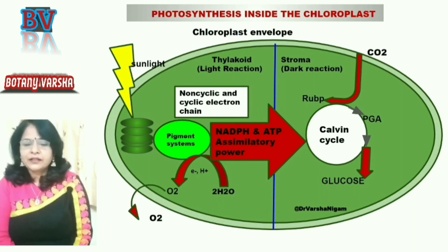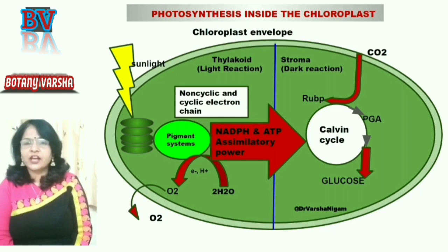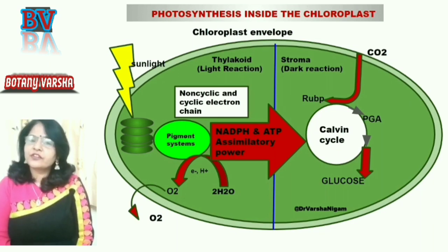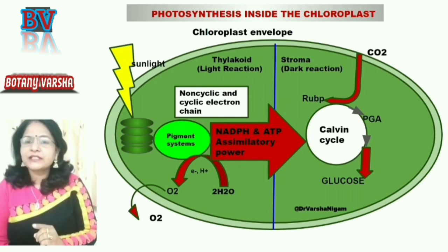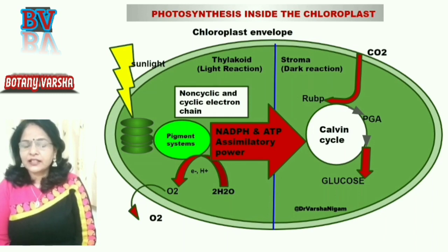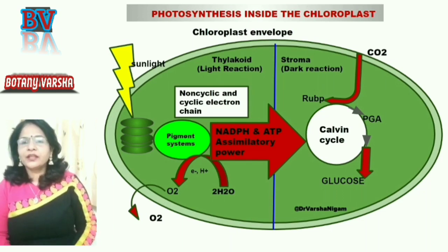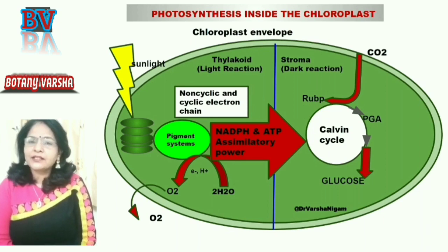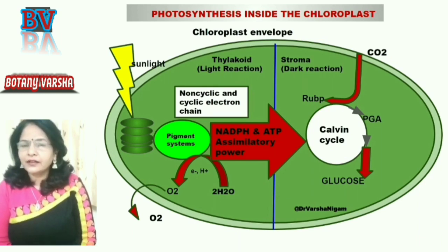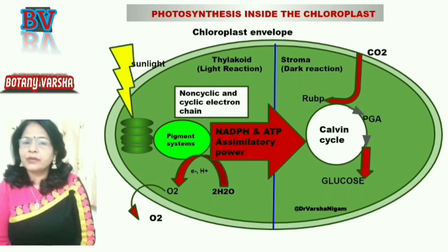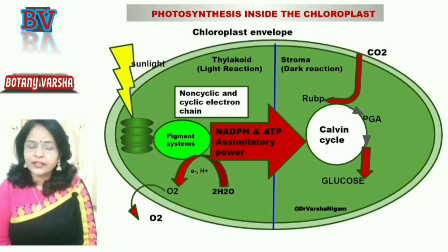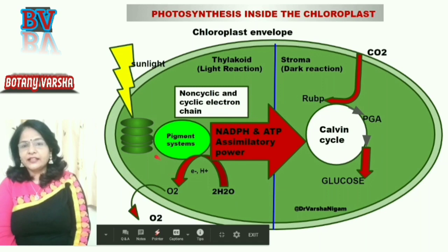To summarize: the light reaction produces assimilatory power in the form of ATP and NADPH, which is transferred to the stroma and utilized in the Calvin cycle for carbohydrate production. The overall photosynthesis reaction is CO2 plus H2O, giving carbohydrate and oxygen in the presence of sunlight and chlorophyll. Sunlight is utilized in the light reaction, oxygen is released in the light reaction, and glucose is produced in the dark reaction.